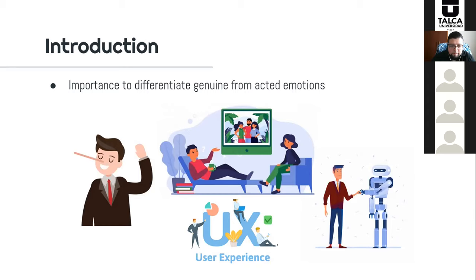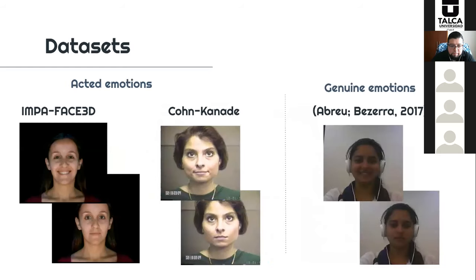In this work, our objective was to investigate the features of facial expressions that can be used to differentiate acted from genuine emotions. For this, we initially considered only happiness and sadness emotions. We used three datasets: fake emotions were acquired from the INTERFACÉ 3D and CK+ databases, which are widely used in the literature, and genuine emotions were acquired from a dataset where participants were provoked by music and image stimuli, which elicited fear, sadness, or happiness emotions.